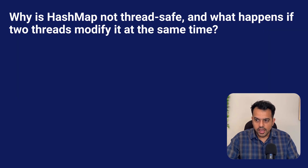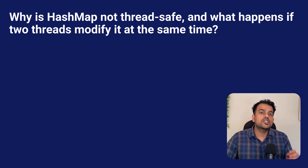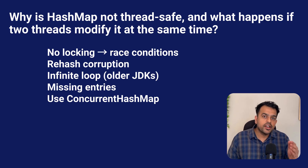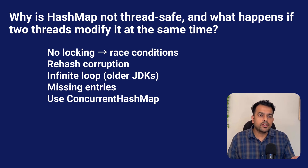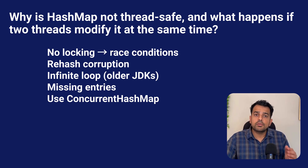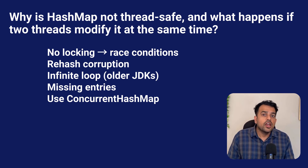The next question is: why is HashMap not thread safe, and what happens if two threads modify it at the same time? HashMap is designed for high performance, not safety. It allows multiple threads to modify the internal bucket without any coordination. When two threads operate on the same bucket at the same time, race conditions occur. In older Java versions this was even more dangerous — the HashMap could get into an infinite loop during rehashing, the internal structure could get corrupted, and you might see missing entries, unexpected nulls, or even 100% CPU usage. Modern JVMs are better but HashMap is still not safe for concurrent writes. That's exactly why ConcurrentHashMap exists — it handles concurrency much more gracefully using segmented bucket-level locking and CAS operations.